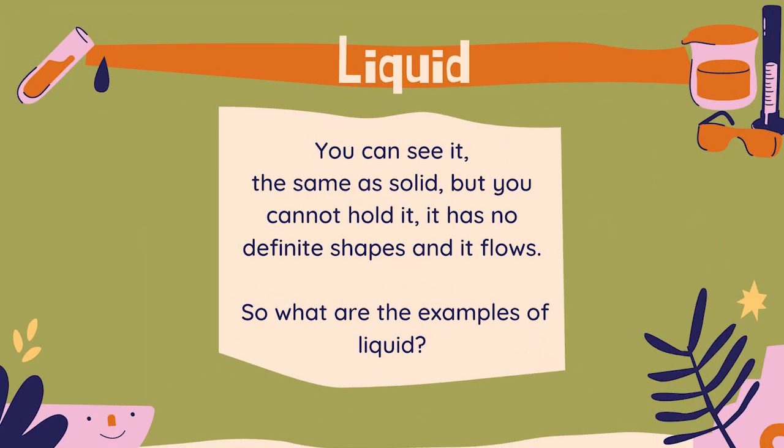The second one is liquid. What are the characteristics of liquid? You can see it, but unlike a solid, you cannot hold it. It has no definite shape and it flows. Examples of liquid are water, milk, urine, blood, and alcohol.